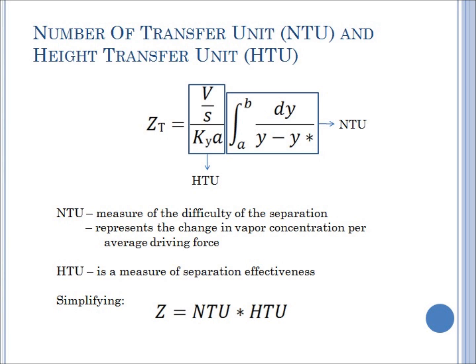Y minus Y prime is the concentration difference driving force for the gas phase. As you can see, V over S over KYA is equal to the height transfer unit, while the integral of 1 over Y minus Y prime is the number of transfer units. As defined, NTU is the measure of the difficulty of the separation. It represents the change in vapor concentration per average driving force, while HTU is the measure of separation effectiveness. Simplifying, we have Z is equal to NTU times HTU.